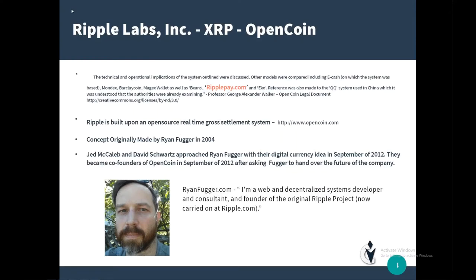Ripple Labs, XRP, and OpenCoin. OpenCoin is the open source code that was used to develop the XRP token. Ripple is built upon an open source real-time gross settlement system, OpenCoin.com, where the concept was originally made by Ryan Fugger in 2004. He describes himself as a web and decentralized systems developer and founder of the original Ripple project, now carried at Ripple.com.